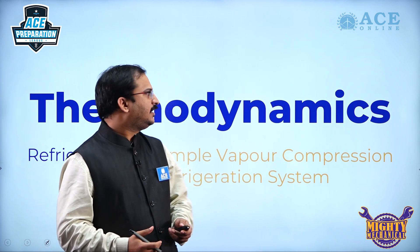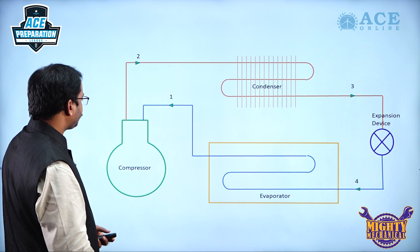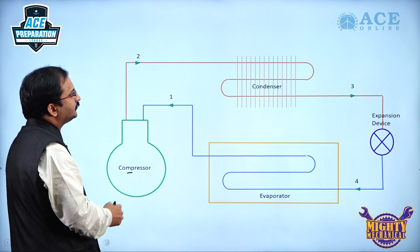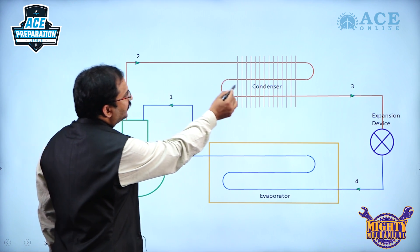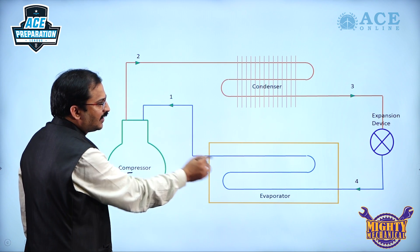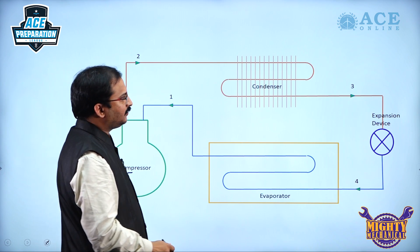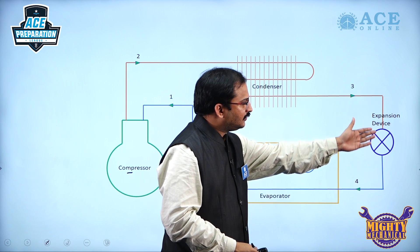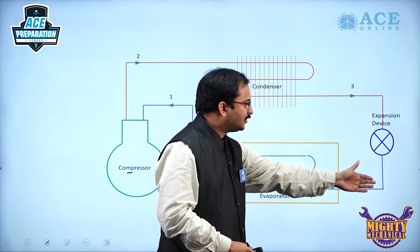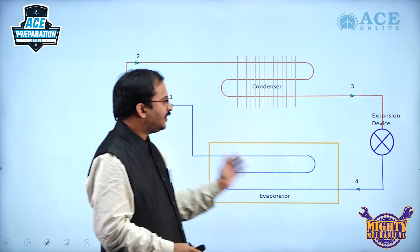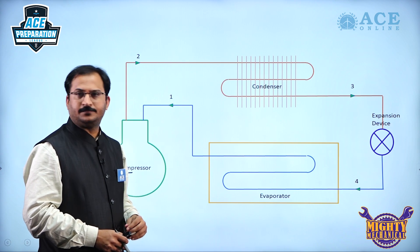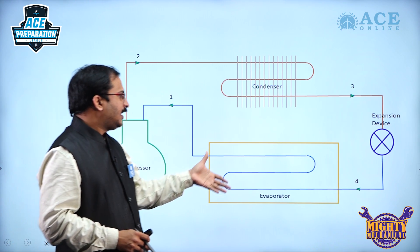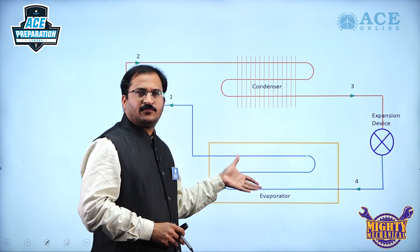Let us see the diagram. You can observe there is a compressor connected to the condenser as well as the evaporator. From the condenser, the refrigerant flows through the expansion device and enters into the evaporator. Let us look at the evaporator part first.